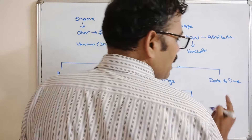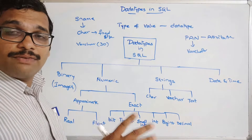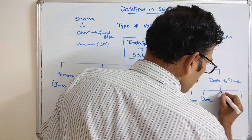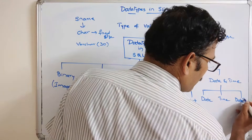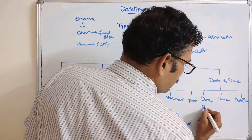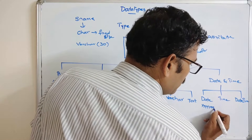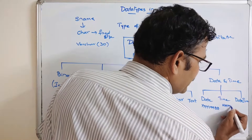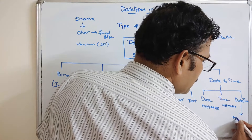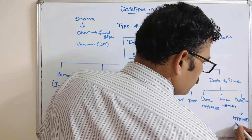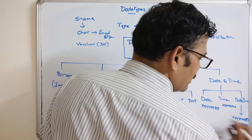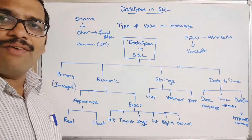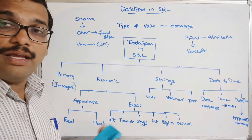The last category is date and time. It is classified into three types: date, time, and datetime. Date accepts a four-digit year, two-digit month, and two-digit day. Time accepts hours, minutes, and seconds. Datetime accepts a four-digit year, two-digit month, two-digit day, two-digit hours, two-digit minutes, and two-digit seconds. These are all the different data types available in SQL.